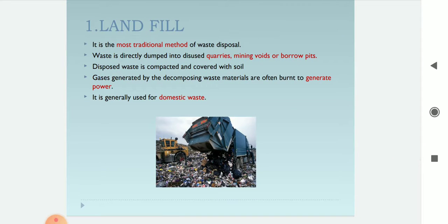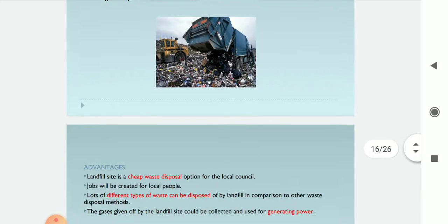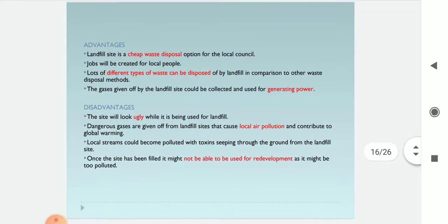Landfill is the most traditional method of waste disposal. Waste is directly dumped into disused quarries, mining sites, or borrow pits. Disposure waste is compacted and covered with soil. Gases generated by decomposing waste material are often burned to generate power, and it is generally used for domestic waste. Advantages: landfill is a cheap waste disposal option, jobs are created for local people, many types of waste can be disposed of, and gases can be collected to generate power.